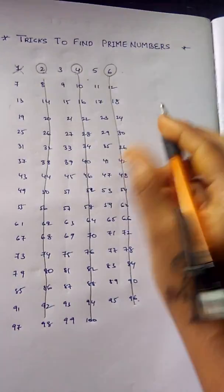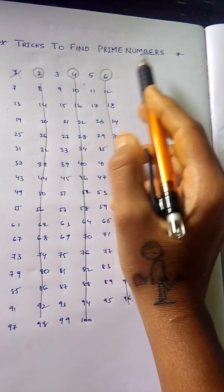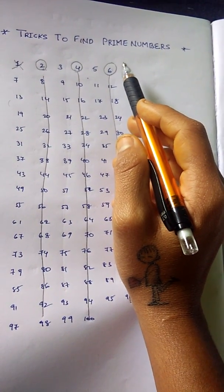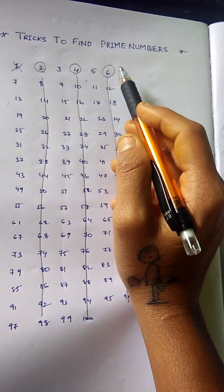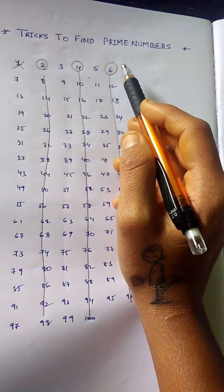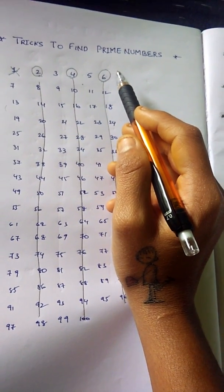So we are left with three columns now. All these prime numbers are going to exist in these three columns only. So that solves half of the problem.